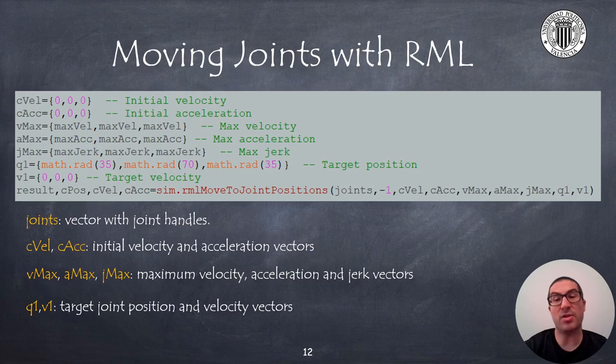The last two arguments of the function are the target position and target velocity we want. Usually we will create motions with zero initial and target velocities, but it is also possible to create joint paths with non-zero velocities. The RML moveToJointPositions function is a blocking function, which means that the next instruction will not be executed until the movement has been completed. This implies that the code must necessarily be implemented in a threaded script. The function returns the reached position as well as the current joint velocities and accelerations that can be used as input arguments the next time we use the same instruction.